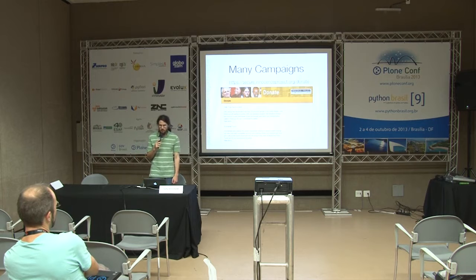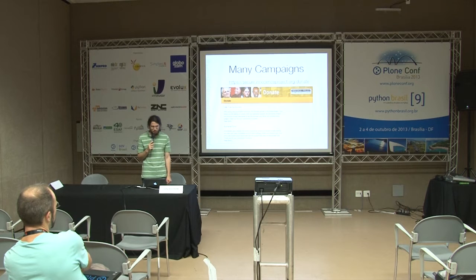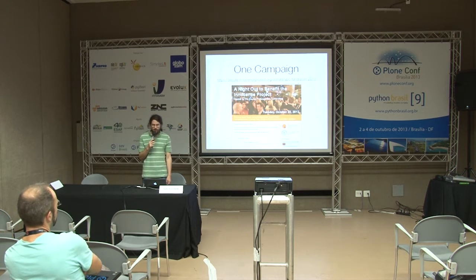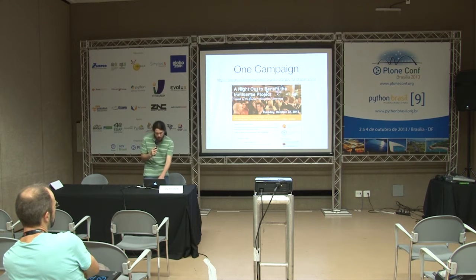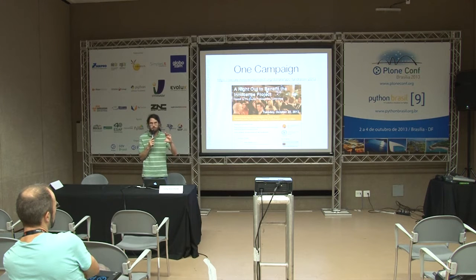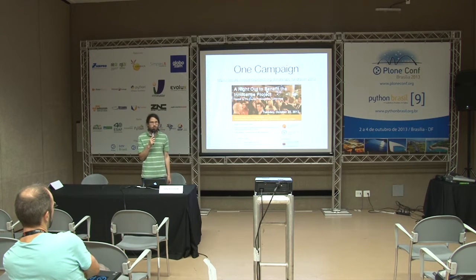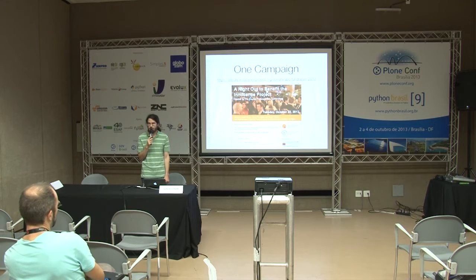This is what it looks like in the wild on the Innocence Project's site. This is sort of the page just listing different campaigns. The next one is what a single campaign looks like — you have a nice banner at the top, you've got information, and you'll see on the next one the widget for donating and choosing your amount to donate. Over on the right you've got the progress bar and some badges indicating the status of the organization as being a recommended nonprofit to donate to.